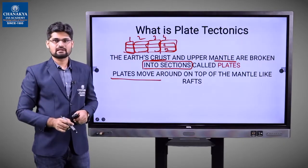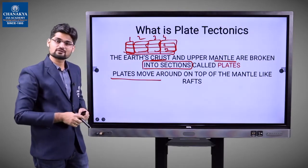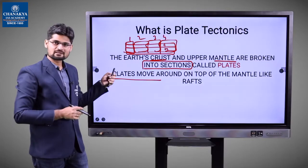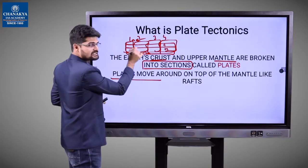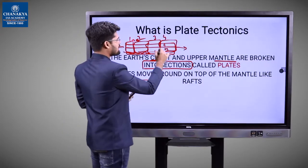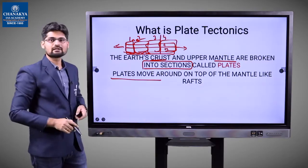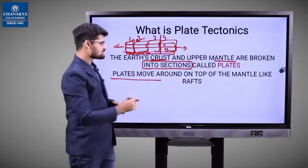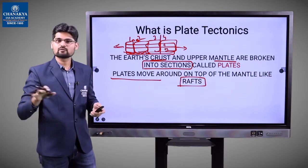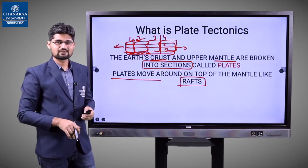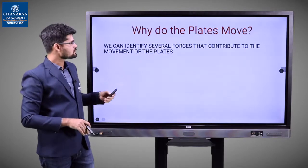These plates move because beneath them there is a molten, semi-molten asthenosphere, as we remember from the interior structure of the earth. On this molten layer, these plates tend to move — sometimes towards each other, sometimes away from each other, and sometimes parallel to each other. This movement is like a raft moving on the surface of water, and that's why this concept is called plate tectonics.